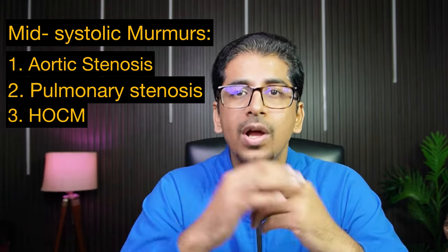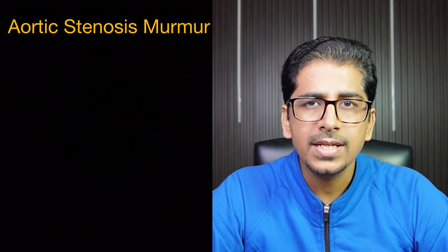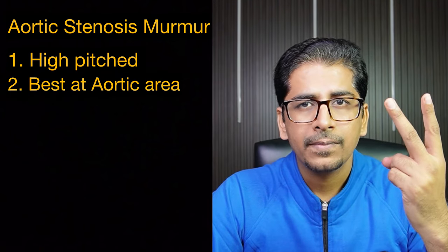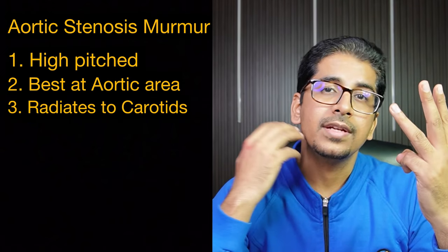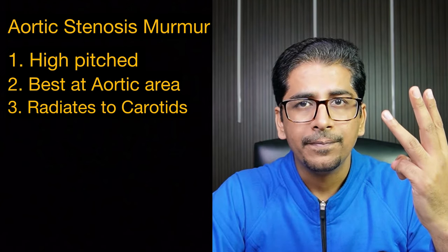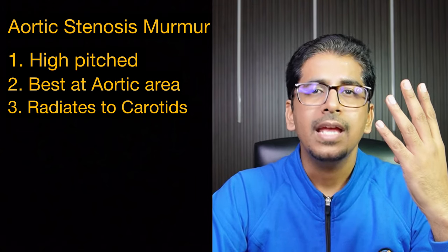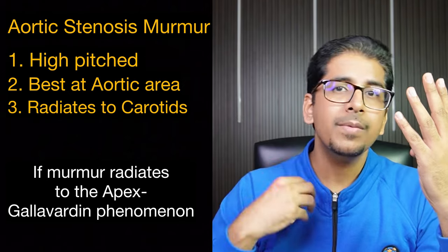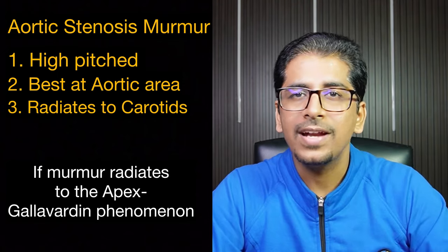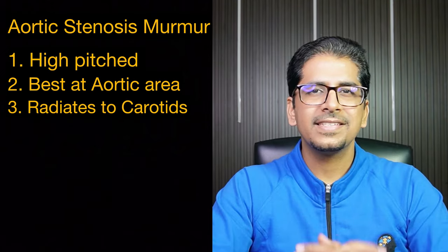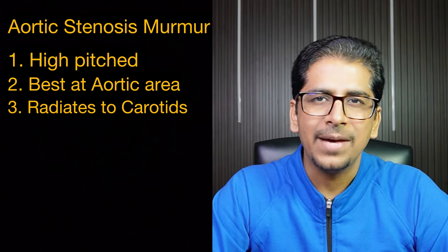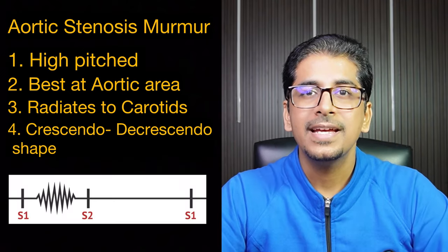Aortic stenosis murmur is high-pitched, best heard at the aortic area, and it radiates to the carotid — always auscultate the carotid, ideally with the bell. If the murmur also radiates to the apical area, that is called Gallavardin's phenomenon — an important MCQ point. The shape of this murmur is crescendo-decrescendo.